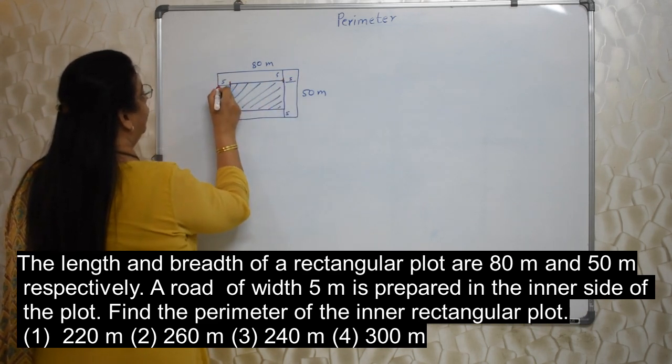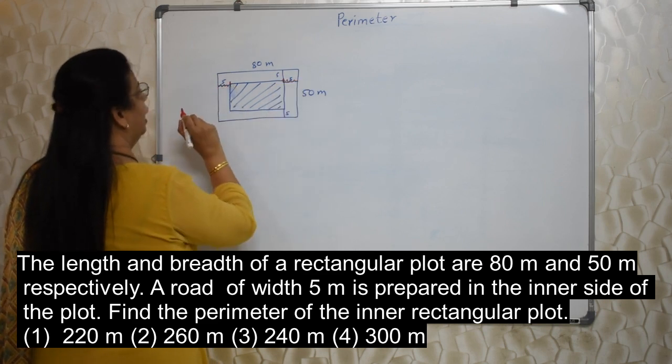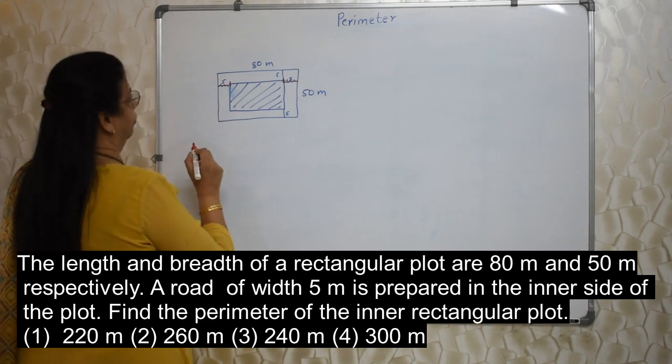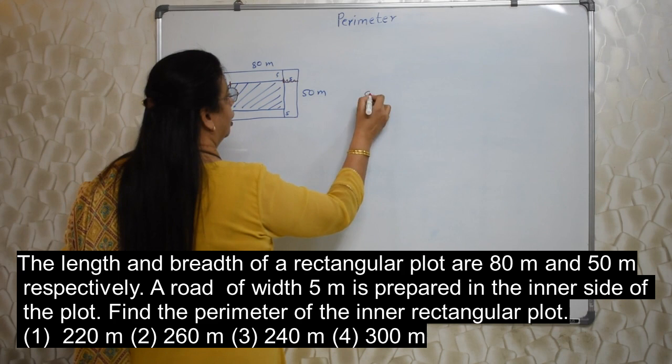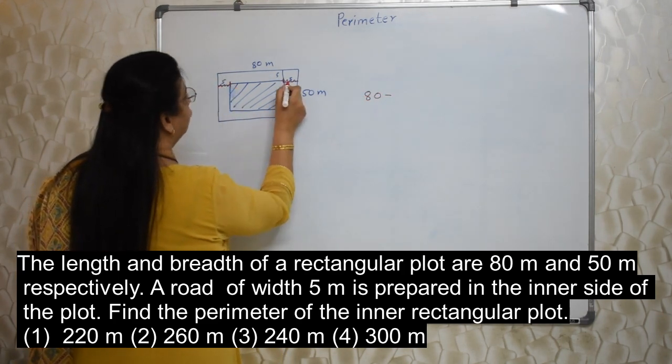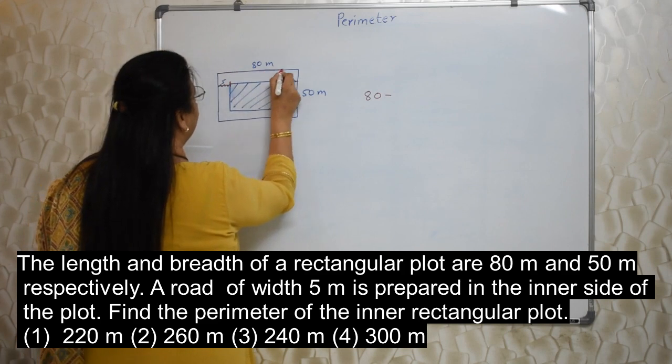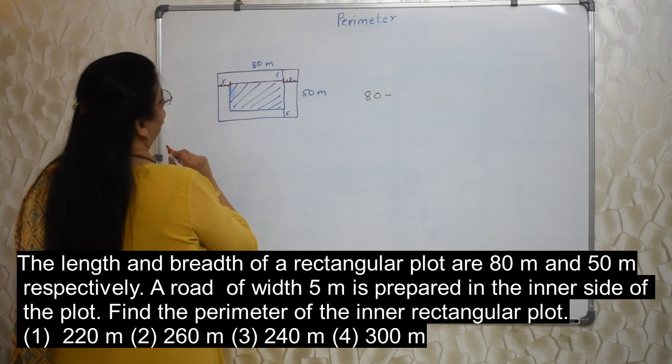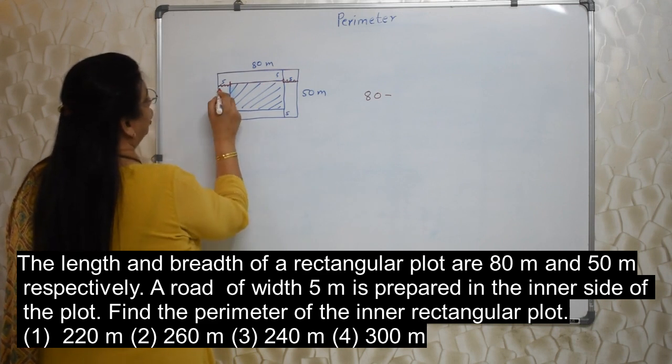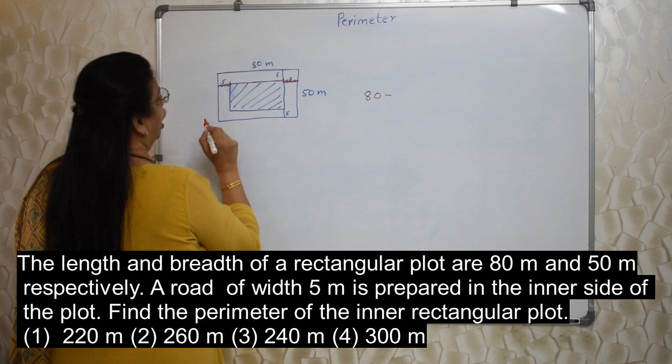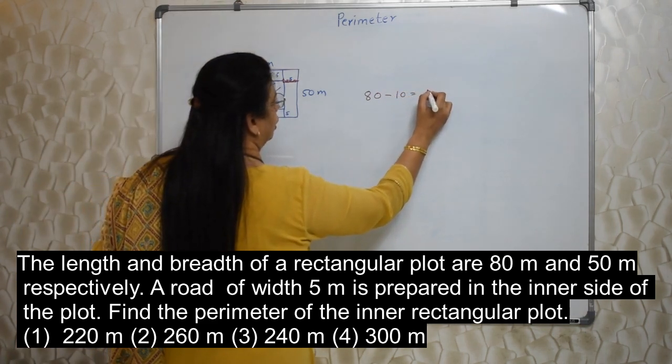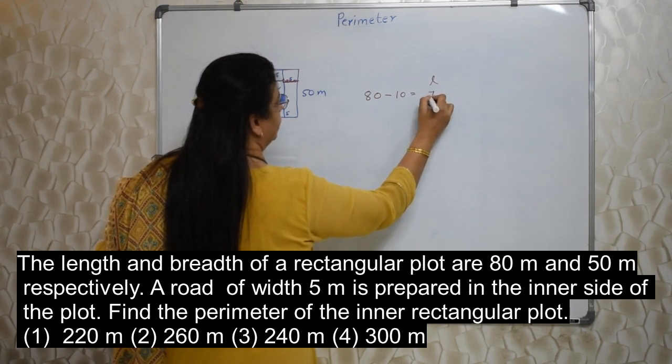So, from this 80, if we reduce this 5 and reduce this 5. We will get the length of the inner, smaller rectangle. Means, if I from 80 reduce this 5 and this 5. See, this entire is the length of the bigger rectangle. And this much is the length of the smaller rectangle. Means, what is not there? This portion and this portion. How much is this? 5 and 5. So, I have to reduce 10. So, the length of the smaller rectangle is 70.